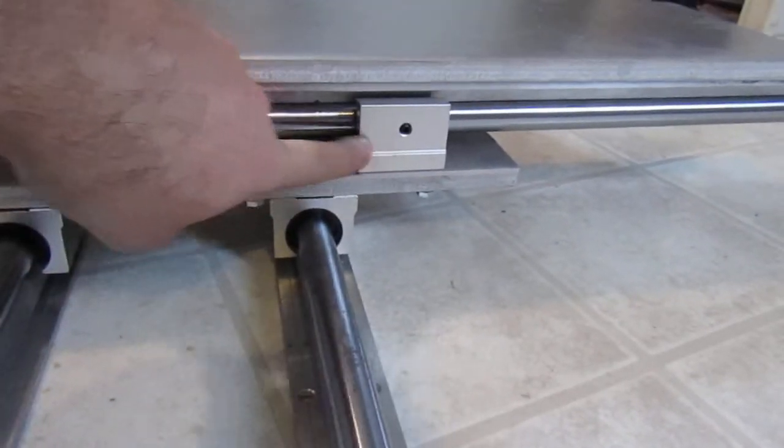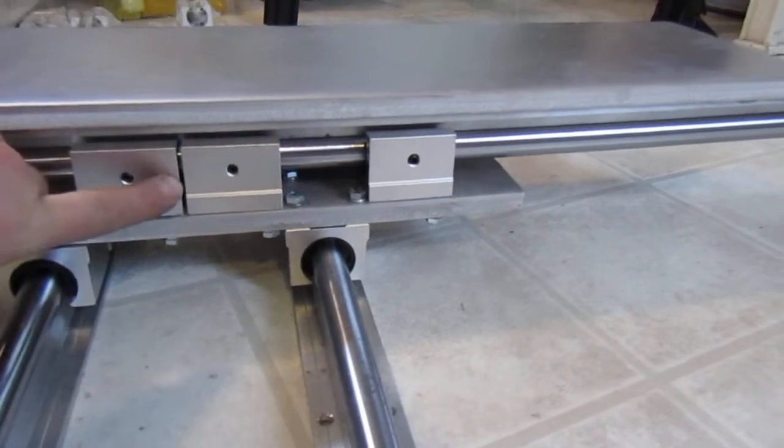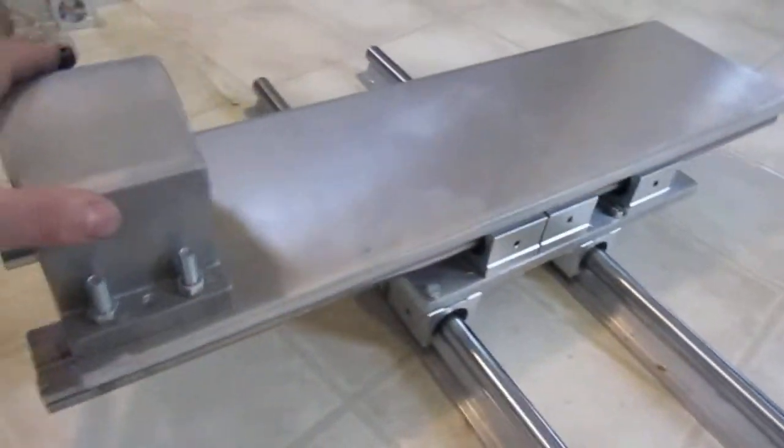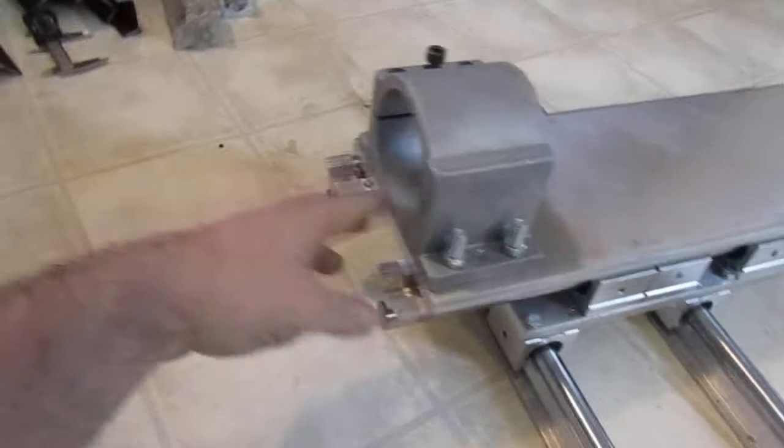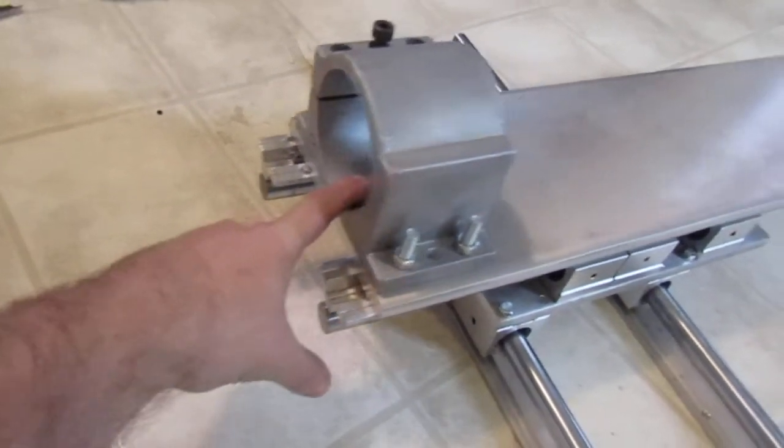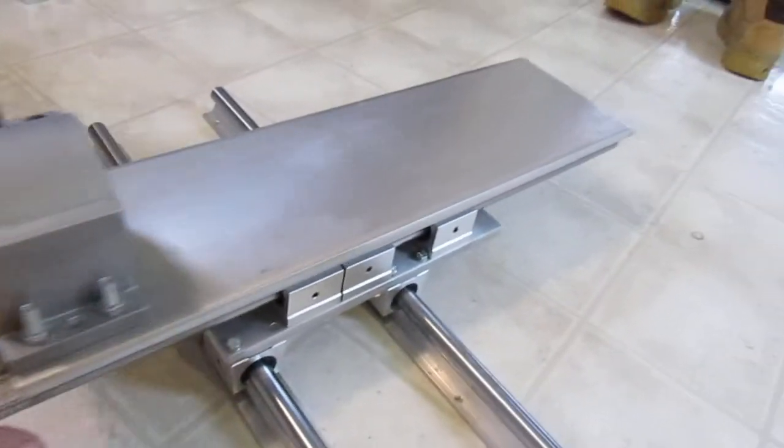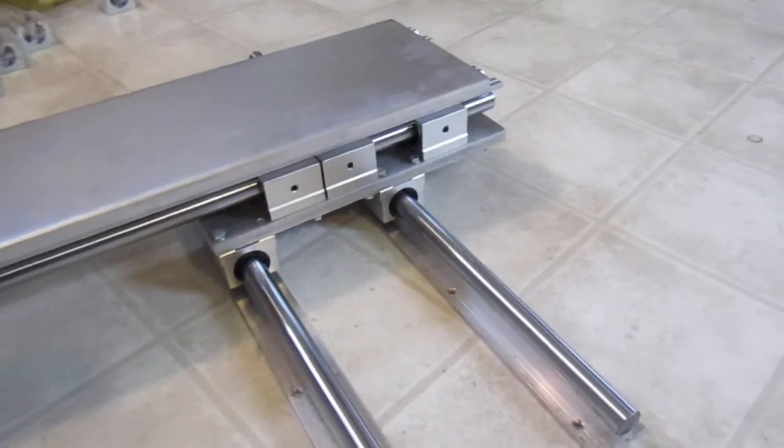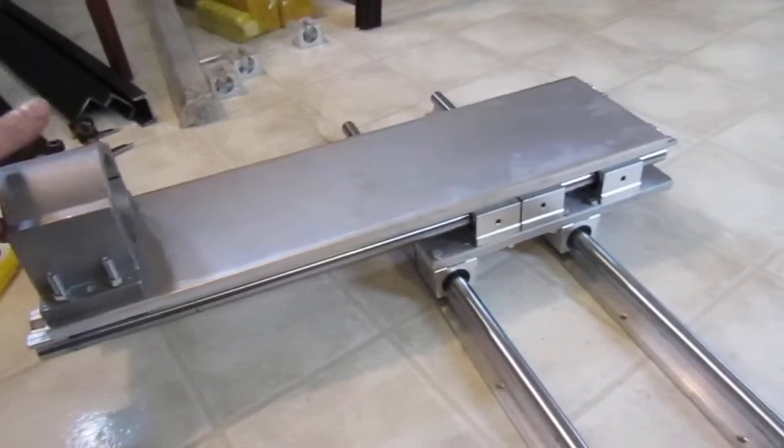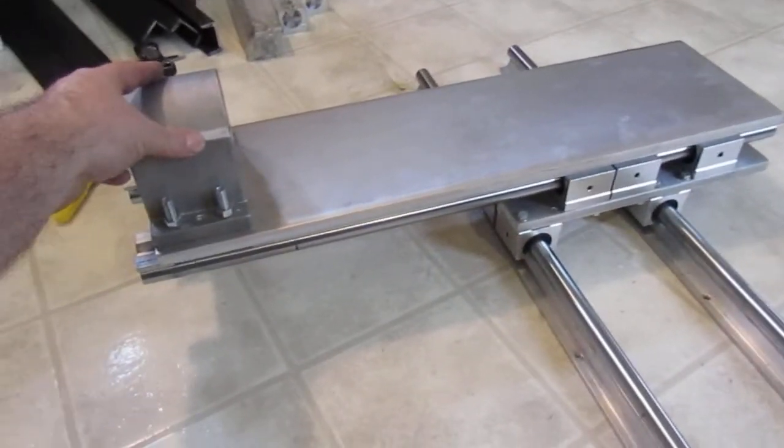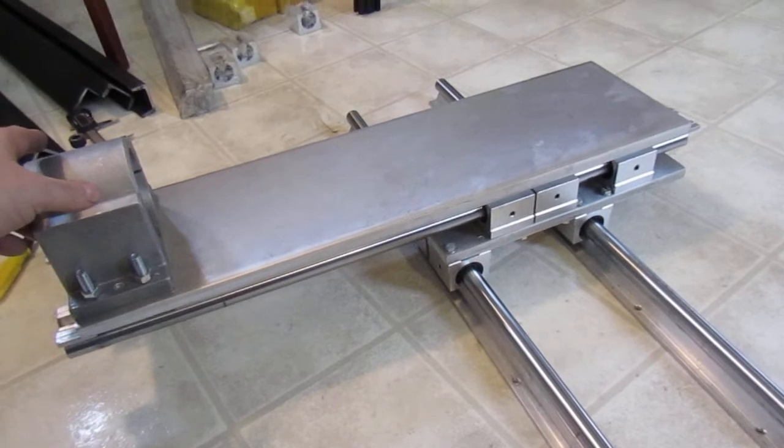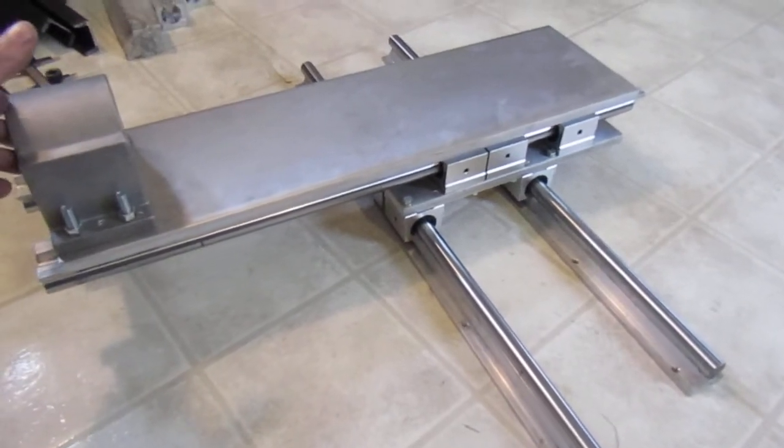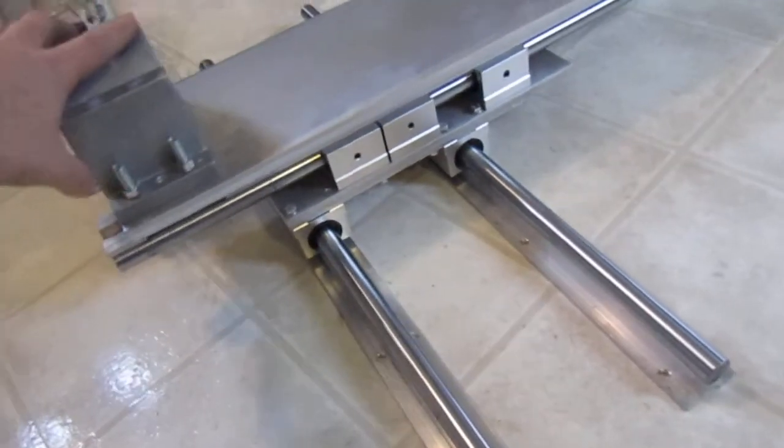Each rail has three bearings, so each axis has a total of six bearings. This is what holds the actual spindle motor. Normally this would be pretty far down, like this far down to reach the work table. It's going to spend a lot of time down that far, not all the way up.